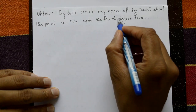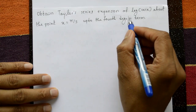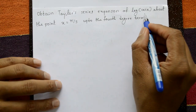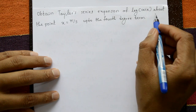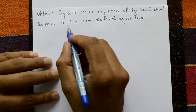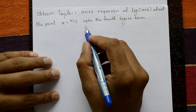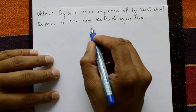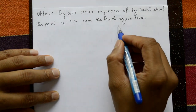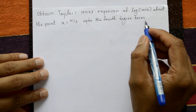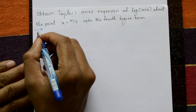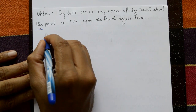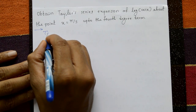Obtain the Taylor series expansion of log(cos x) about the point x = π/3, up to the fourth degree term.